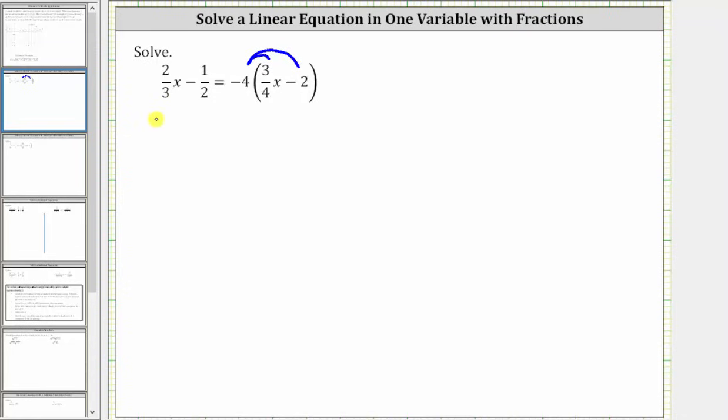We have 2/3x minus 1½ equals, and now we distribute negative four. Negative four times 3/4x is negative 3x.